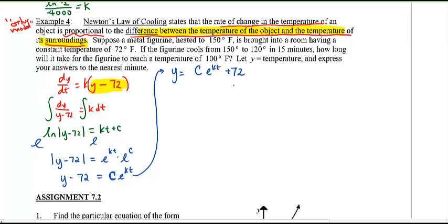That e to the C with the absolute value will combine together into some constant, so I'll just call it C e to the kt. Notice now it's no longer y equals C e to the kt, but y minus 72 equals C e to the kt. And if you want to solve for y, we can say y equals C e to the kt plus 72. Now we do need to solve for C, don't we? We have some initial condition. It says suppose the figurine is heated to 150 degrees Fahrenheit at t equals 0. So 150 equals C e to the k times 0 plus 72. E to the 0 is always 1, so C plus 72 equals 150. So what do we know? C must be equal to 78.